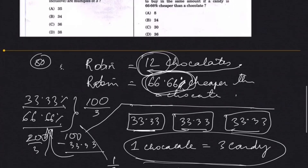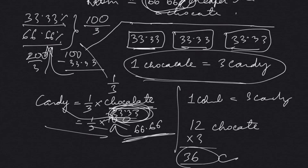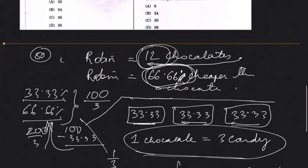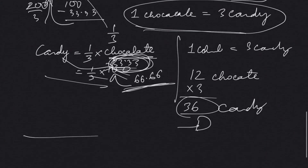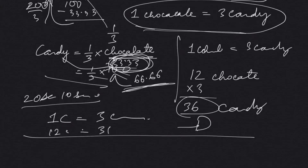With the same amount, he has 12 chocolates — so just multiply by 3: you get 36 candies. So 36 is option D. Even this question in the exam is just a matter of seconds — candy is 66.66% cheaper, that means 12 chocolates gives 36 candies. Answer in 5 seconds.